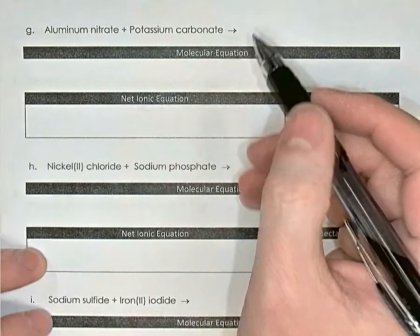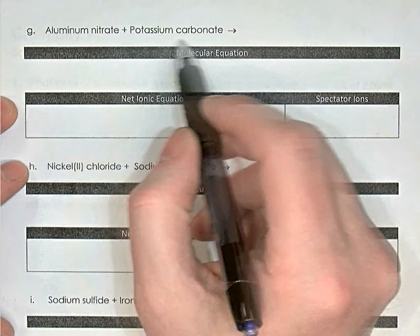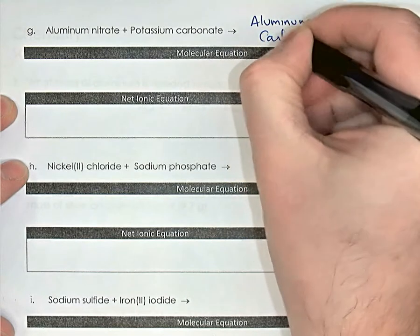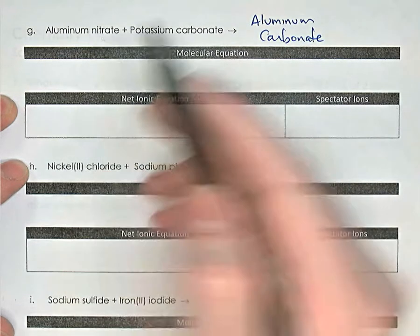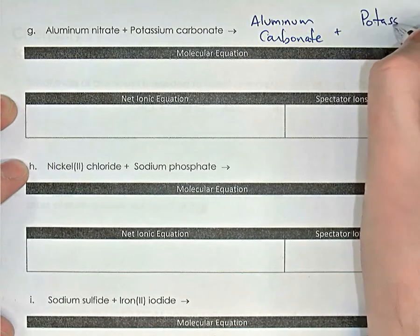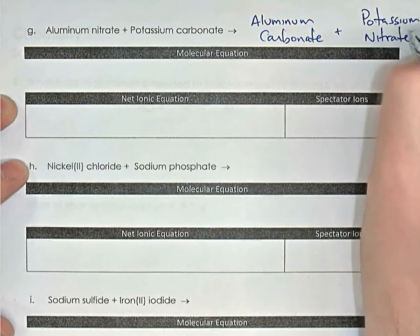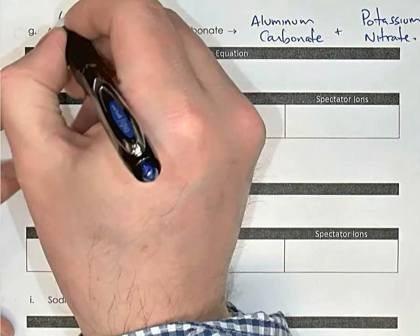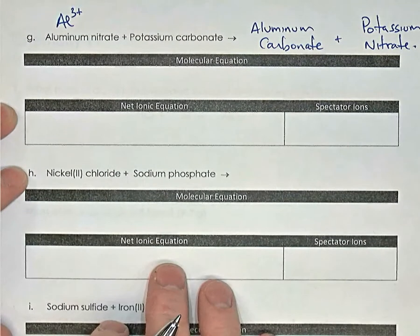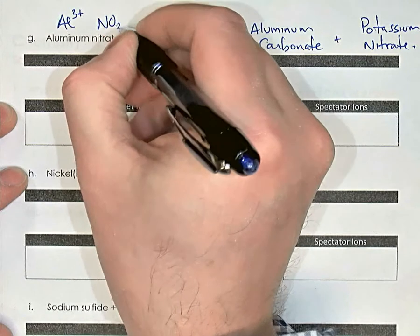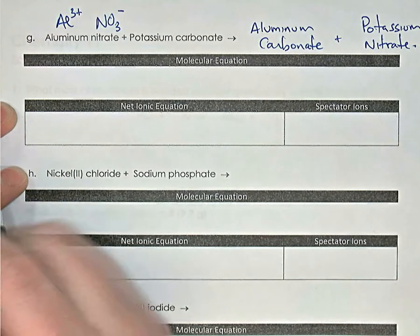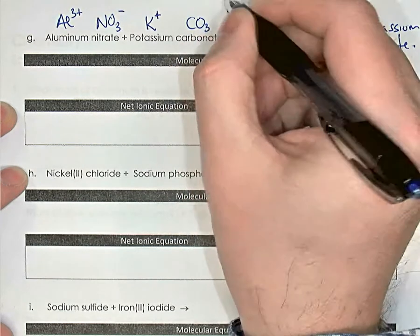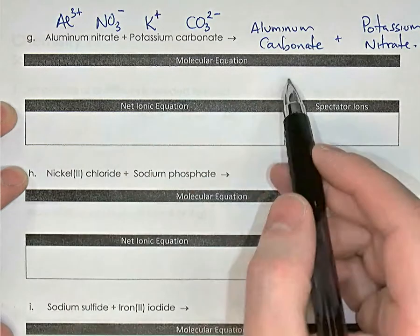Precipitation reactions are also double replacement reactions. We're mixing two solutions together. In this case we're going to find aluminum carbonate as a product and the other product would be potassium nitrate. The ions involved: aluminum has a charge of 3 positive, so Al³⁺; nitrate is a complex ion NO₃ with a charge of negative one; potassium is an alkali metal with a charge of positive one; and carbonate is another complex ion CO₃ with a charge of 2 negative.